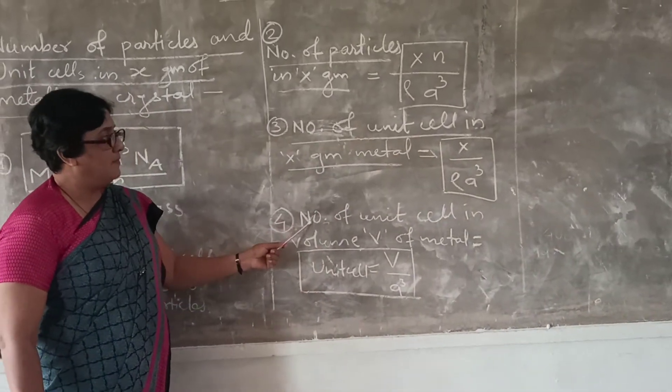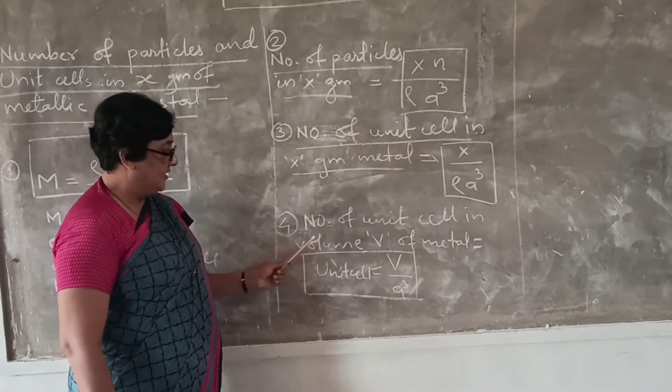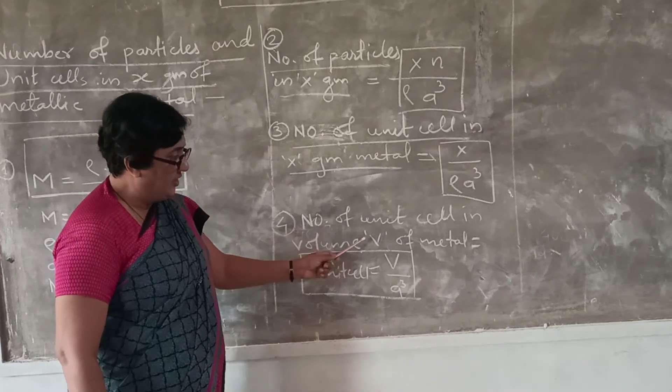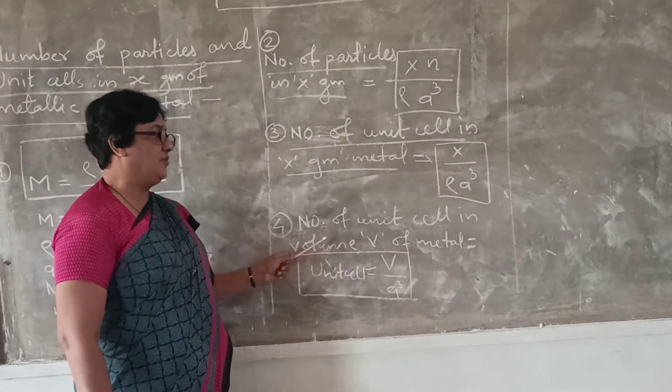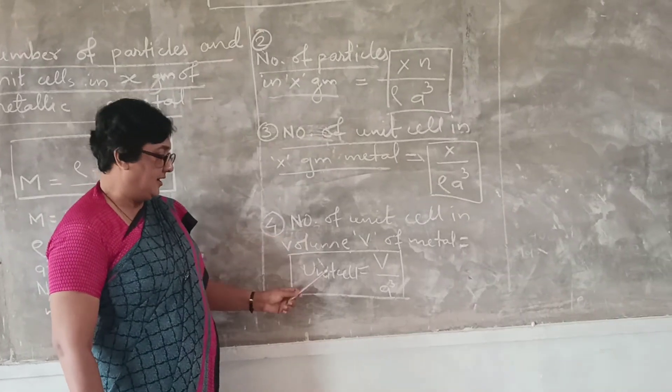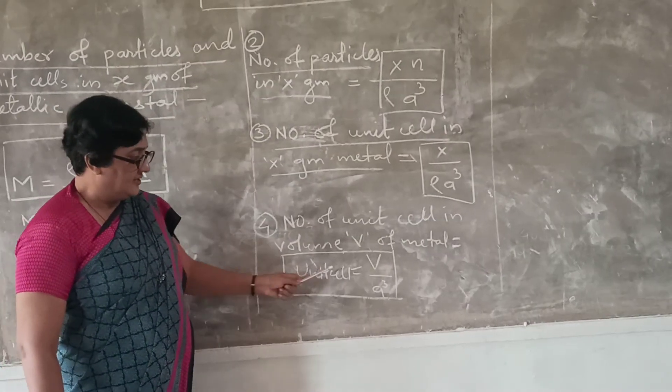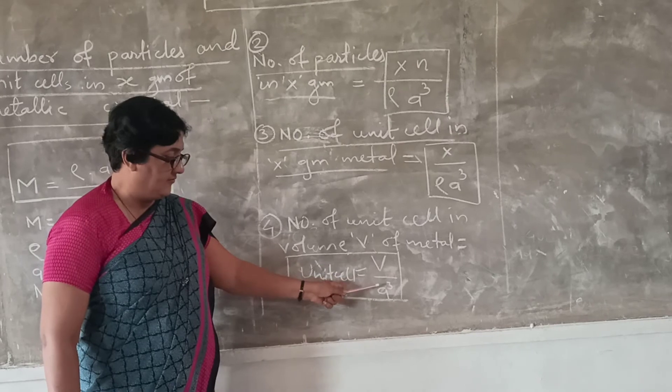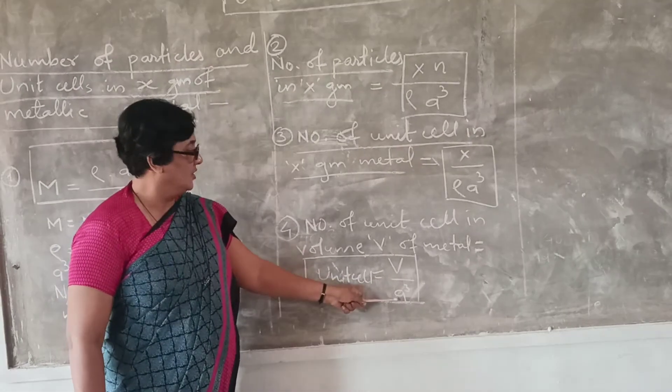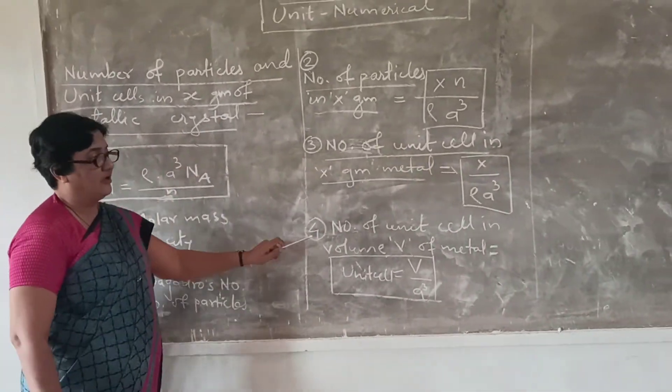The fourth one, number of units cell in volume V of meter. If the volume V is given and number of unit cells are to be calculated, then unit cell is equal to volume divided by A cube. So learn all these four formulas.